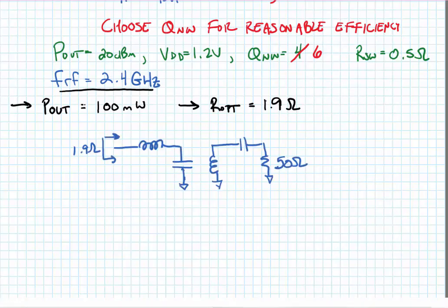I like to do this match where I break up the tapped capacitor match into two L-section matches. We're going to go from 50 ohms to an intermediate impedance, and then from the intermediate impedance to 1.9 ohms.